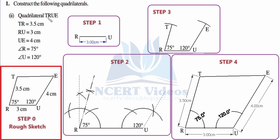As discussed in the first part, we always check the angles first. We have R and U — are we given any side RU as its vertices? Yes, we are given line segment RU whose measurement is 3 centimeter, so we start from this line segment itself.